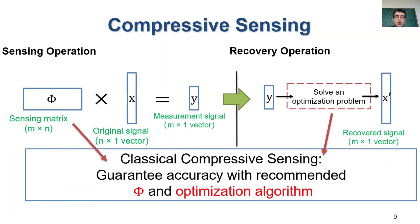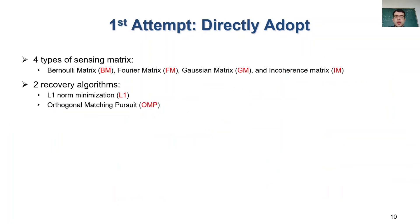In classical compressive sensing, there are some recommendations for the sensing matrix and the recovery algorithm. Theoretical analysis shows that with such recommended configurations, the recovered signal is guaranteed to be close to the original signal with a high probability.